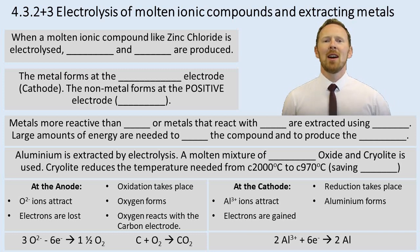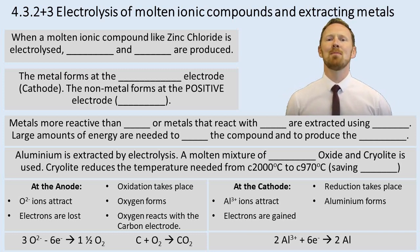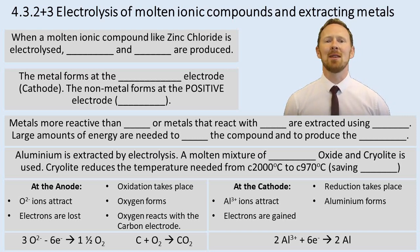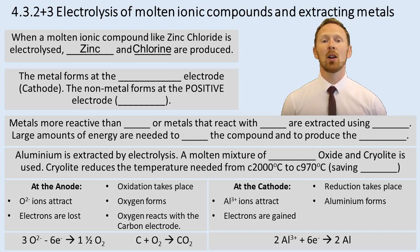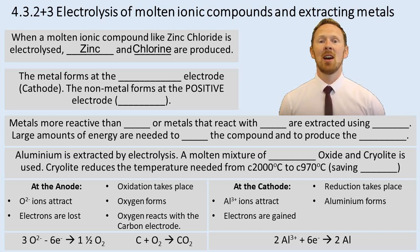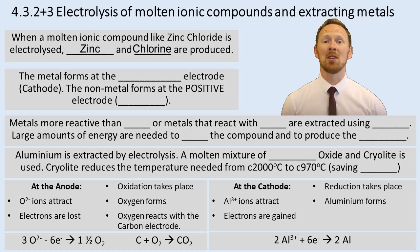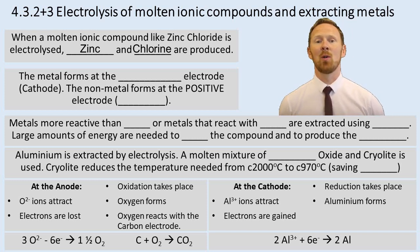Sections 4.3.2 and 4.3.3: electrolysis of molten ionic compounds and extracting metals. When a molten ionic compound like zinc chloride is electrolyzed, zinc and chlorine are produced. The ionic compound is broken down into its elements, zinc and chlorine.